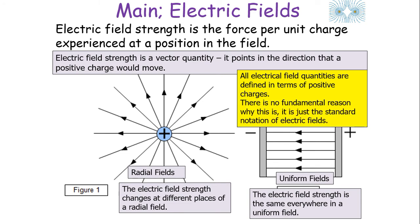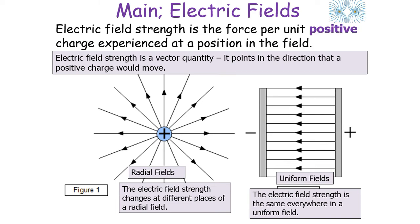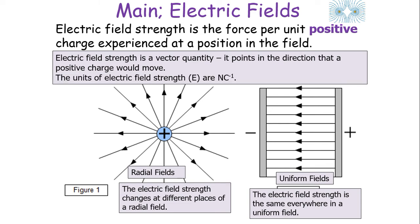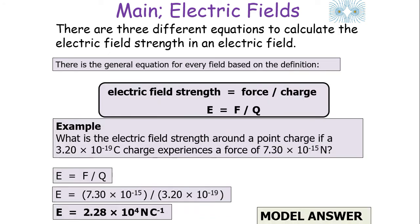There is no fundamental reason why electrical field quantities are defined in terms of positive charges — it's just the standard notation of electrical fields. We now need to amend our definition: the electrical field strength is the force per unit positive charge experienced at a position in the field. The units of electrical field strength are newtons per coulomb, which indicates that our equation is going to be force per charge.